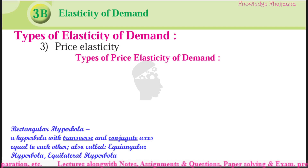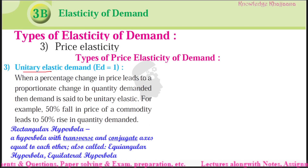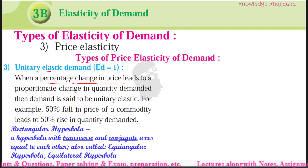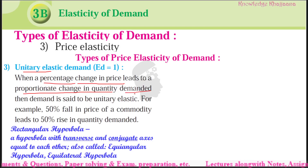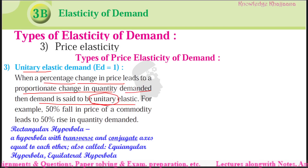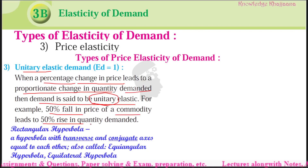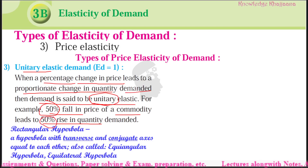The third type of demand is unitary elastic demand. When a percentage change in price leads to proportionate change in quantity demanded — the same quantity of change — then demand is said to be unitary elastic. For example, 50% fall in price of a commodity leads to 50% rise in quantity demanded. The fall in price is 50% and the increase in quantity demanded is 50% — both are same, proportionate to each other. That is called as unitary elastic, and elasticity of demand is equal to one.